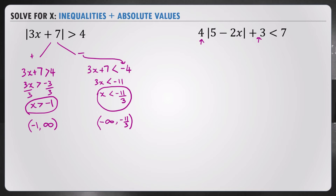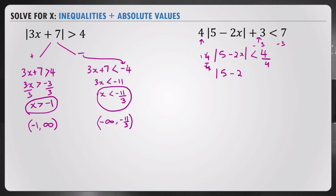We subtract 3 on both sides and we get 4 times the absolute value of 5 minus 2x is less than 4. Then dividing by 4 on both sides, we get the absolute value of 5 minus 2x is less than 1. This is what we work on now.